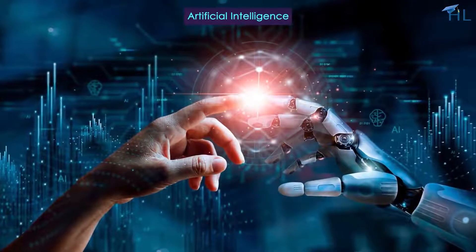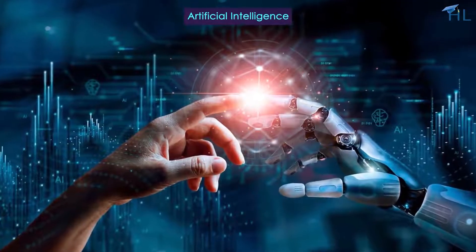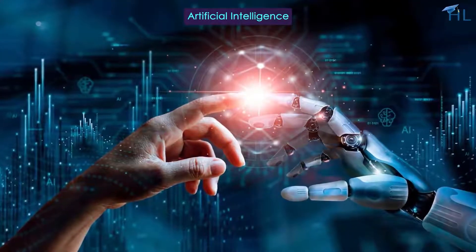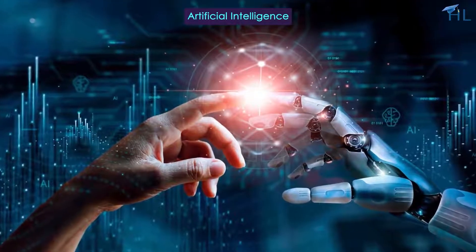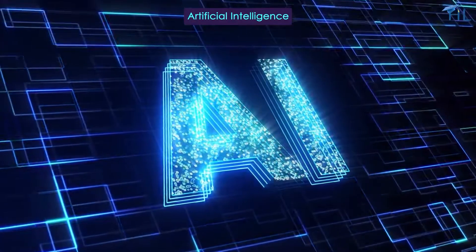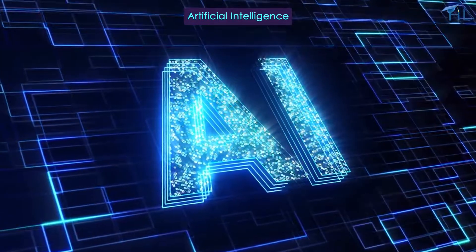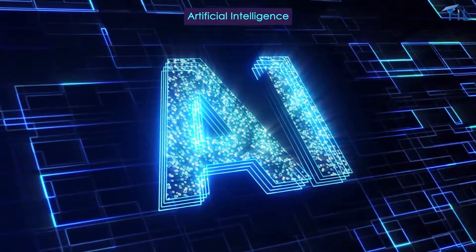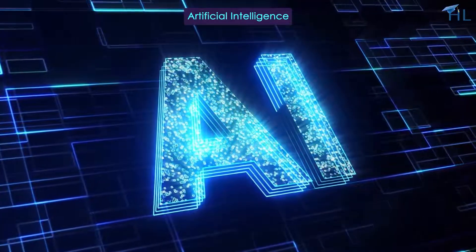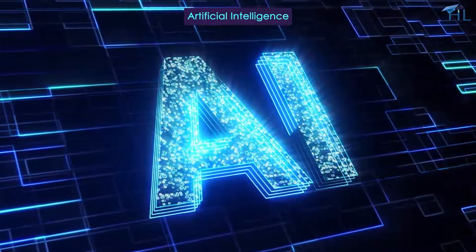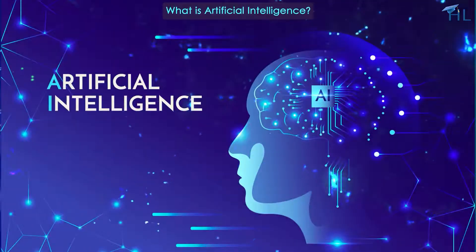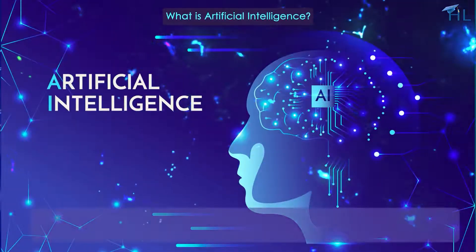Hi there everyone, welcome to our journey into the world of artificial intelligence, or AI for short. Today we are going to explore the different domains of AI and see how they make machines smart. AI is a branch of computer science focused on creating systems that can perform tasks that normally require human intelligence.